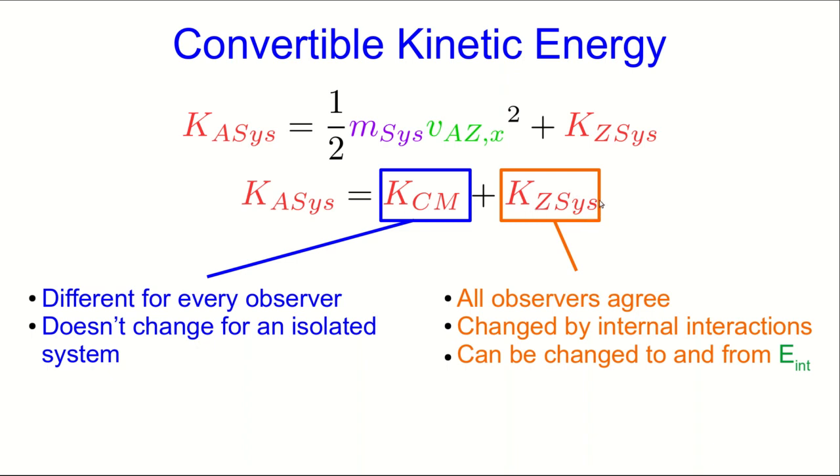This will be changed by internal interactions because internal interactions change the relative velocities of the particles in the system. And so this is the part of the kinetic energy that can be exchanged back and forth with the internal energy of the system, or it can be converted. And so it often gets called the convertible kinetic energy.